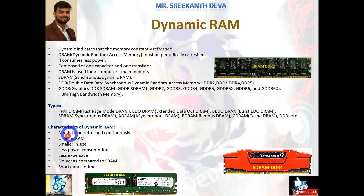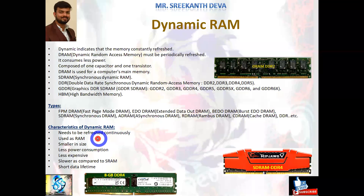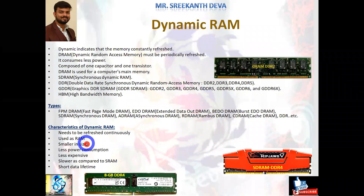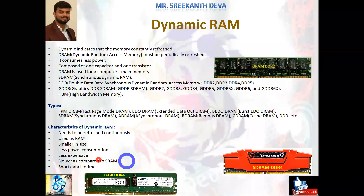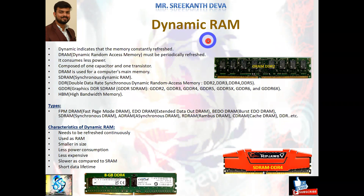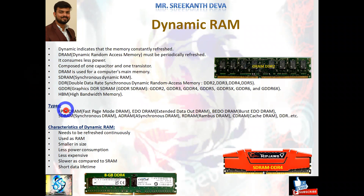Main characteristics of Dynamic RAM: needs to be refreshed continuously, used as main RAM, smaller in size, less power consumption, less expensive, slower compared to SRAM, and short data lifetimes. These are all different types of Dynamic RAMs — DDR2, SDRAM, DDR4 like 8GB DDR4. Some special types include Asynchronous DRAM, where this type of DRAM is not synchronized with the CPU clock.